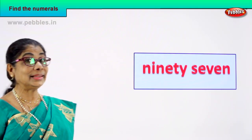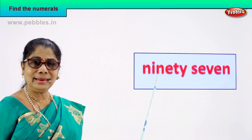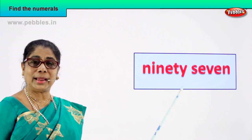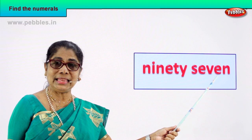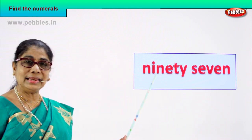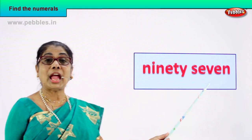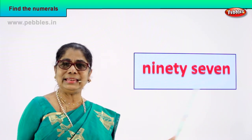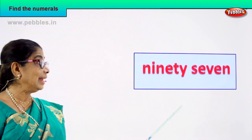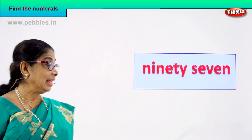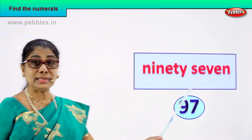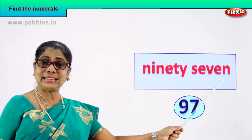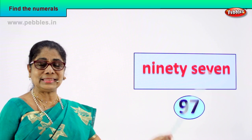Shall we go to another number name so you can guess the numeral? Look: N-I-N-E-T-Y, 90, S-E-V-E-N, 7 — read this, 97. How can we write the numeral for 97? Good — 9 and 7, 97. 9 and 7, 97. 97 is the numeral for this number name.